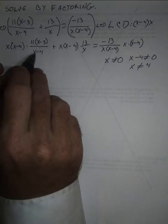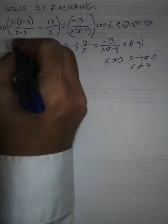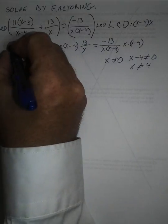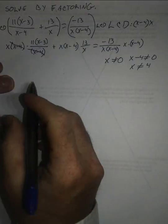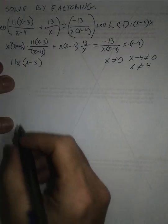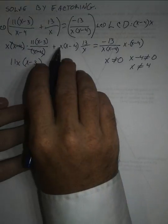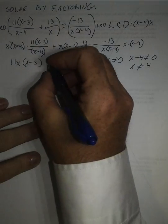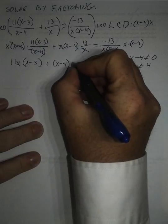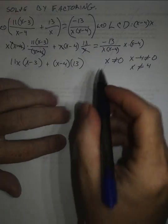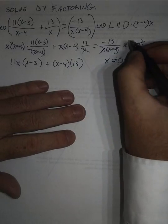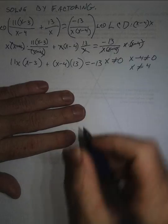So in this first part of my expression, I've got an x minus 4 in the numerator and the denominator, so I can simplify and cancel those out. This becomes 11x times (x minus 3). My x's cancel, and this becomes (x minus 4) times 13. And over here both the numerator and the denominator cancel, and I'm just left with negative 13.